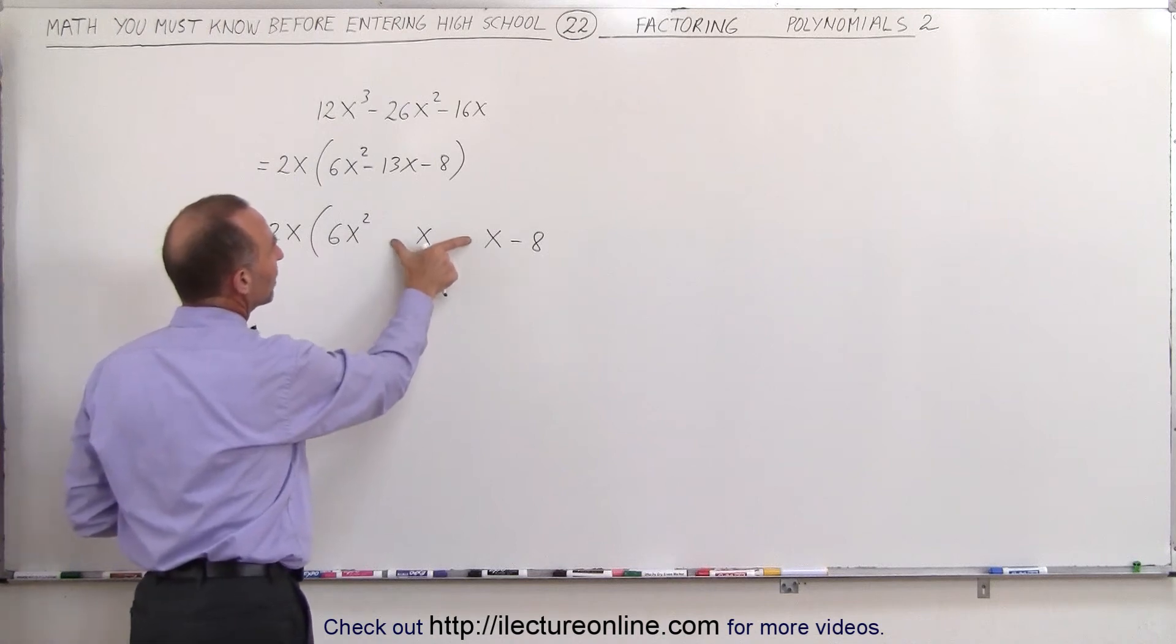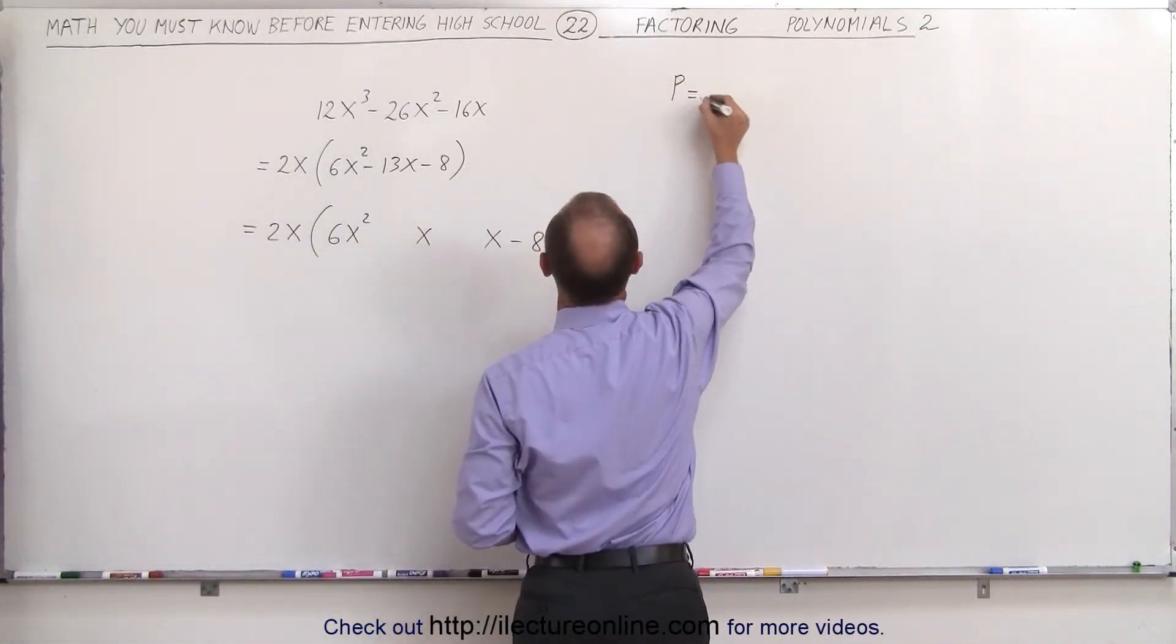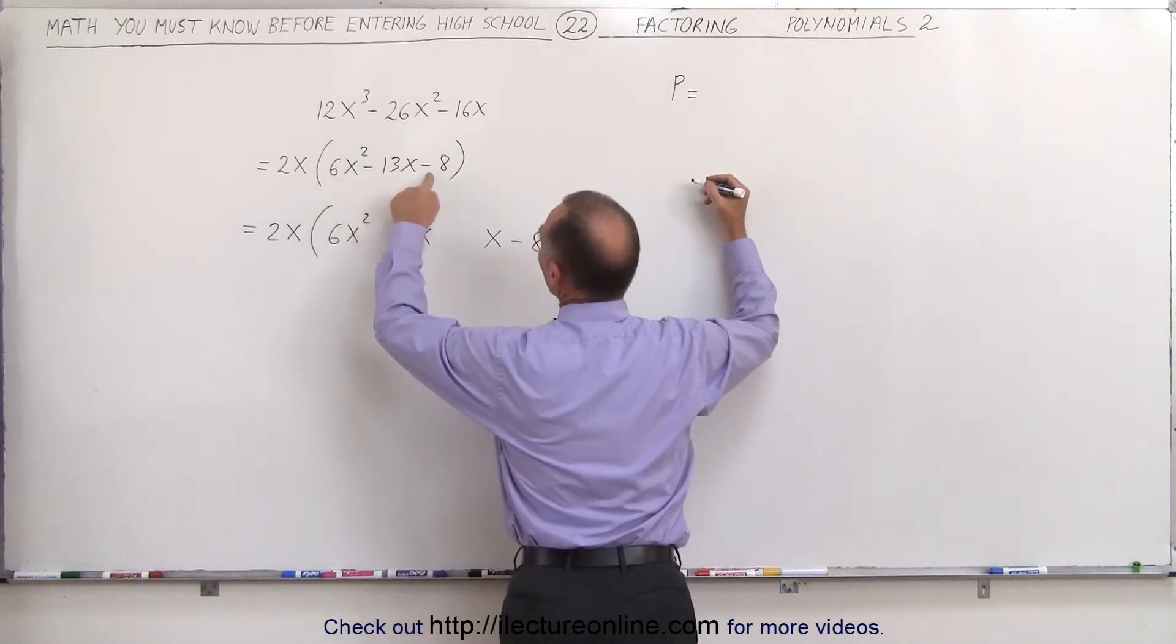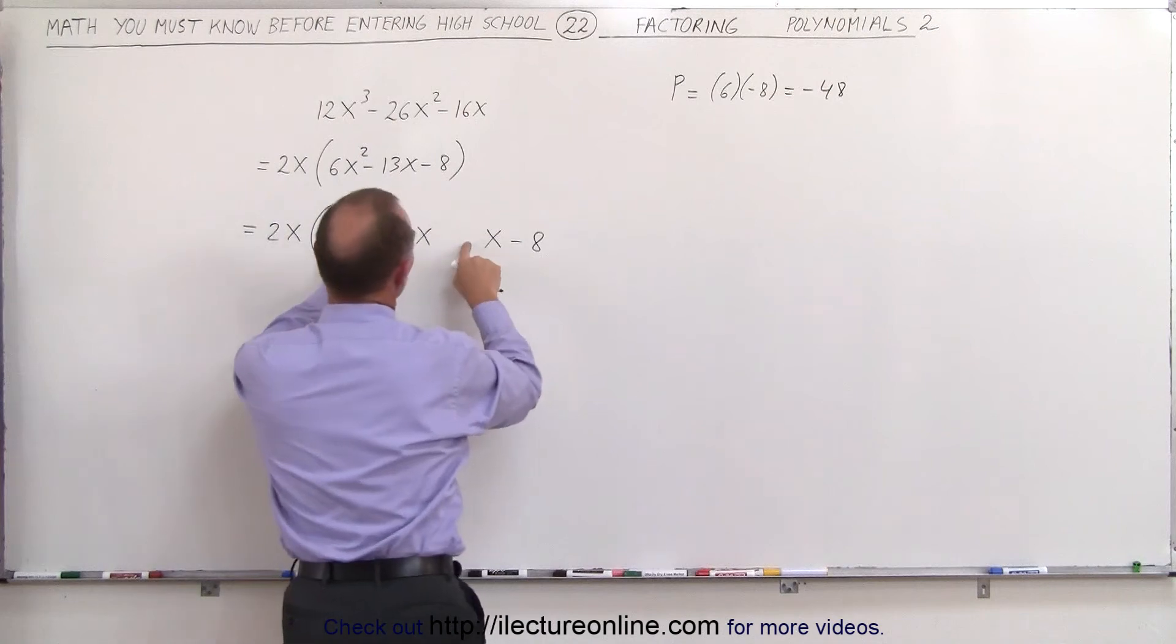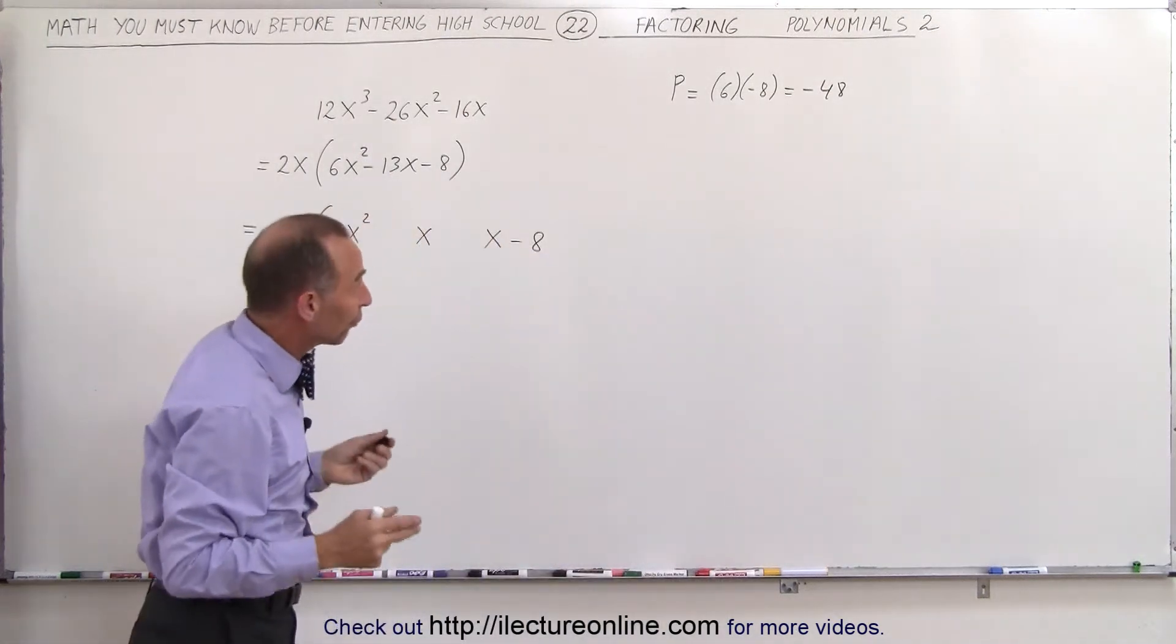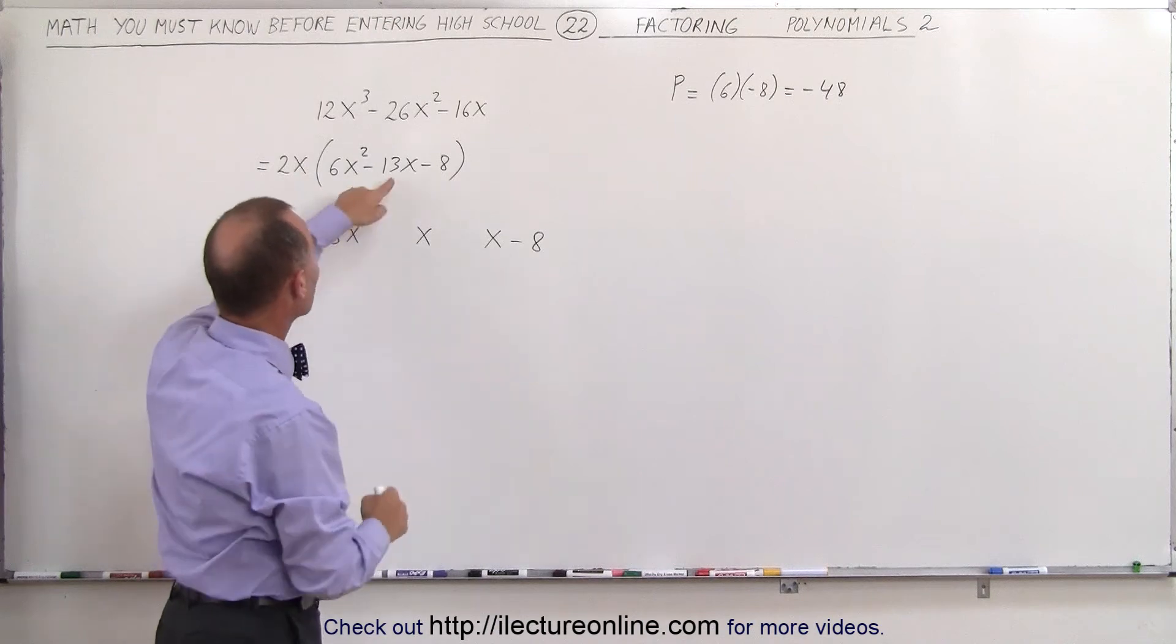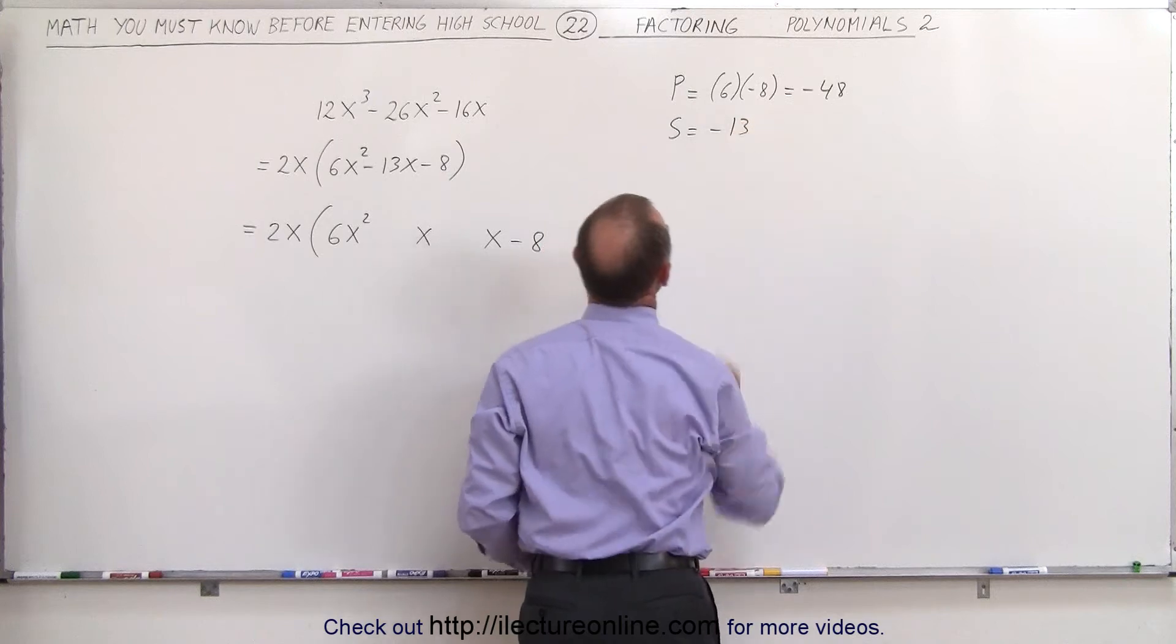What are the coefficients that need to go here? Well, we can find those by saying that the product of those two numbers must equal 6 times the negative 8. In other words, these two numbers multiplied together should give us a minus 48. And of course, when we add them together, we should get a negative 13. So the sum must equal negative 13.